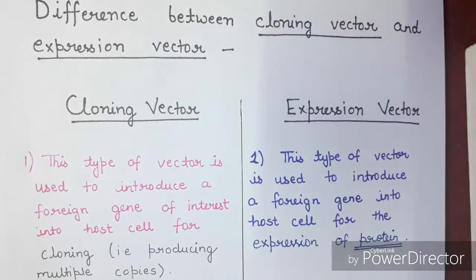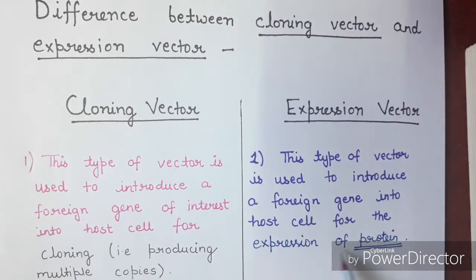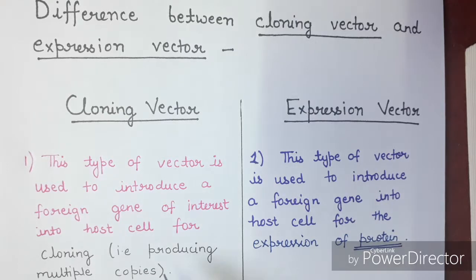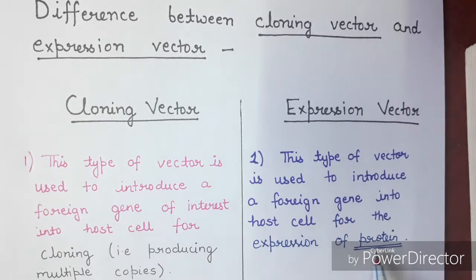On the other hand, the expression vector is used to introduce a foreign gene into the host cell for the expression of protein. This is the main difference between the cloning vector and the expression vector. The cloning vector is used for producing multiple copies of the desired gene, whereas the expression vector is used for the expression of the desired gene into a particular protein.